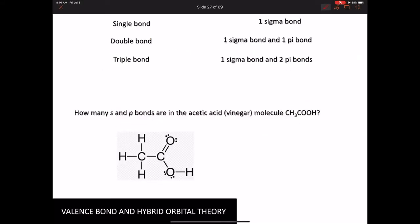All right, so this is using valence bond theory and hybrid orbital theory to explain bonding in molecules. We already saw this, but single bonds are always a sigma bond. A double bond is a sigma and a pi. A triple bond is a sigma and two pi's.